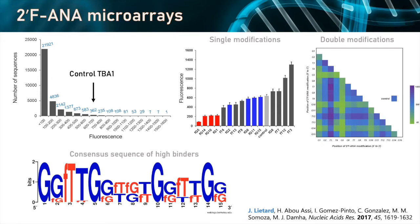We found that anything containing a single FANA modification at certain positions would actually increase binding, while a single FANA modification at other positions would decrease binding because of decreasing fluorescence. We can look at double modifications as well to see how some effects would be compensated by the introduction of another one. We can also try to find a pattern of FANA-DNA modifications in ranges of fluorescence we're interested in — for instance, high fluorescence meaning strong binding to thrombin.